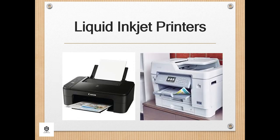Inkjet printers operate by propelling variably sized droplets of liquid ink onto almost any size page. They are the most common type of computer printer used by consumers. Generally, we compare two different types: inkjet and laser. Inkjet printers are likely to be a better choice for people using printers at home, while laser printers are better for business and office use. Inkjet printing is simply spraying tiny drops of ink on the sheet of paper to give an image. They generally use thousands of tiny little jets to shoot ink onto the paper or whatever material they are printing onto.